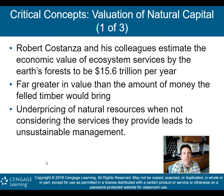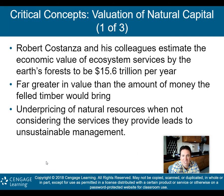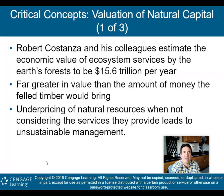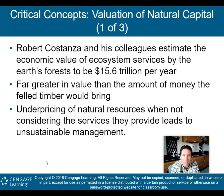The final concept in Chapter 5 is the valuation of natural capital. Robert Costanza and his colleagues estimate the economic value of ecosystem services by Earth's forests to be over $15 trillion per year — far greater in value than what the timber industry brings in. This is what we mean by valuation of natural capital: ecological services the Earth provides. If you put a value on these ecological services, you start to realize that the money from cutting down trees doesn't come anywhere near what forests give us back.